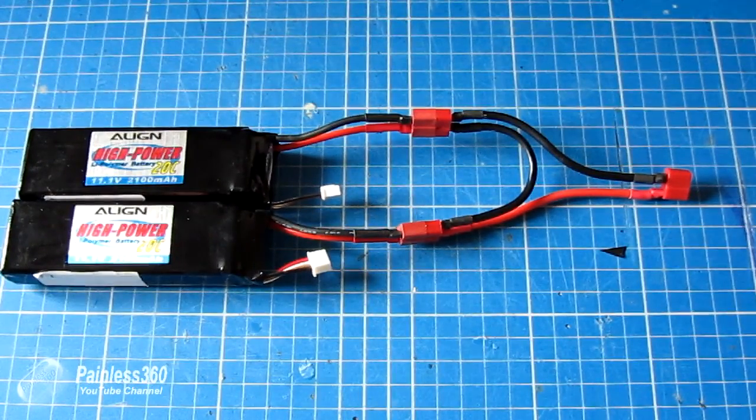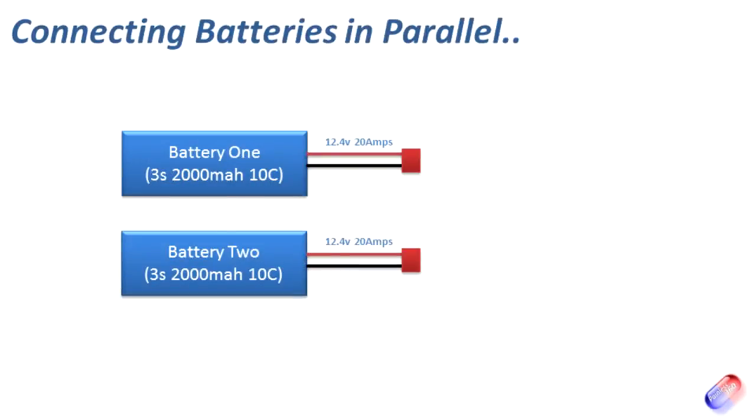So the first one we'll talk about is our friend parallel. Here we have a little diagram showing two simple batteries similar to the ones we've just looked at. Each of them are 3S, so they have about 12.4 volts when they're fully charged.